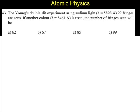Question number 43. Young's double slit experiment using sodium light, lambda equal to 5898 angstrom, 92 fringes are seen. If another color, lambda equal to 5461 angstrom is used, the number of fringes seen will be.